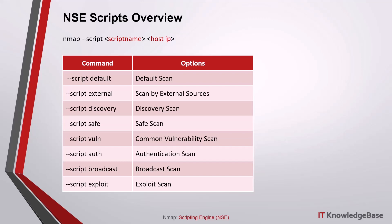--script discovery scripts try to actively discover more about the network by querying public registries, SNMP-enabled devices, directory services, and similar. Examples include html-title to get the title of a website's root path, smb-enum-shares to enumerate Windows shares, and snmp-sysdescr to extract system details via SNMP.